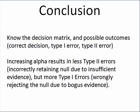Finally, go back and review the decision matrix — be able to draw it from memory and correctly label correct decision, type 1 error, and type 2 error. That's important terminology when we talk about hypothesis testing. Increasing alpha results in fewer type 2 errors — that is, you've lowered the criterion for how much evidence is needed to reject the null. But if you lower that decision criterion, if you make it easier to reject the null, you're also going to increase your type 1 errors — wrongly rejecting the null hypothesis due to bogus evidence, that is, just due to sampling error.